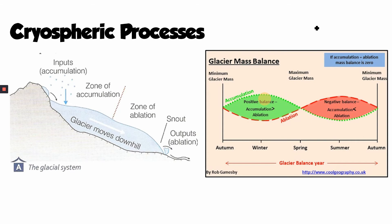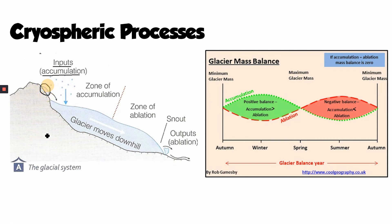Another really important set of processes driving changes in water stores are cryospheric processes — those associated with snow, ice, and glaciers. Looking at a cross-section of a glacier on the side of a mountain, towards the top where it's colder, snow is added to the glacier — we call this accumulation. That snow might come from precipitation or from avalanches depositing snow onto the glacier.